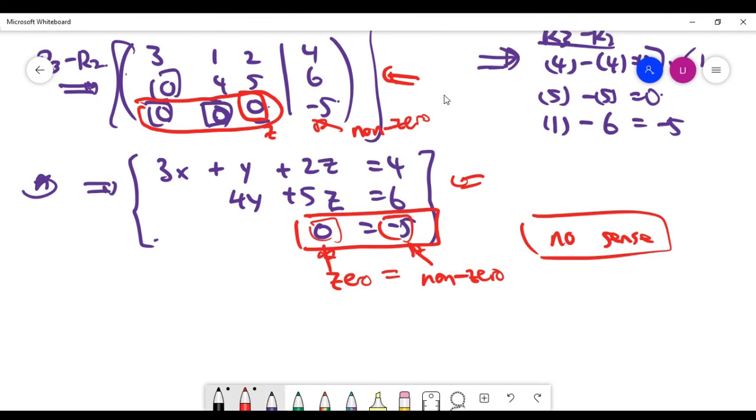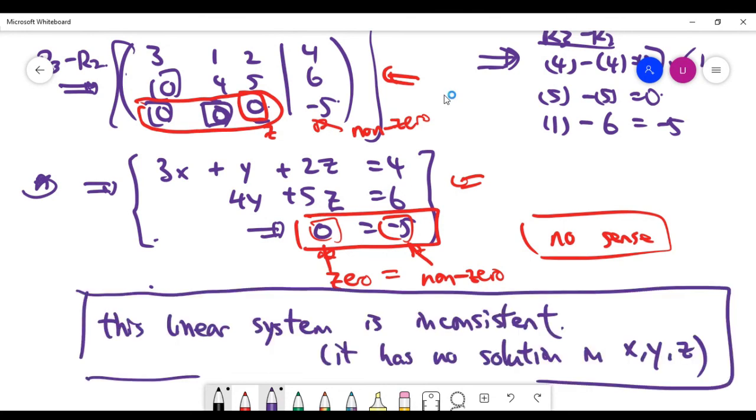So basically, it means this system is not consistent in the sense that there's no solution at all in this system when you're arriving at something which is nonsensical. So let's write down the final conclusion here. We basically say that this system actually is inconsistent. It has no solution in x, y, z.